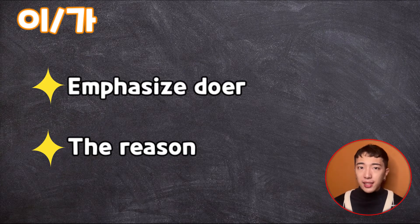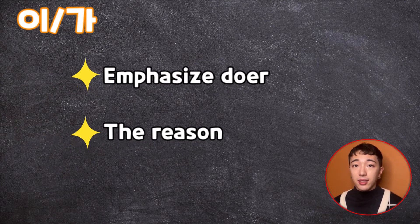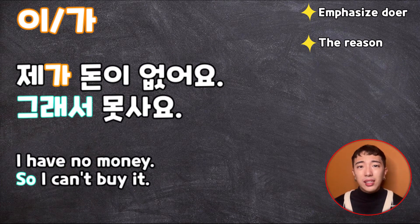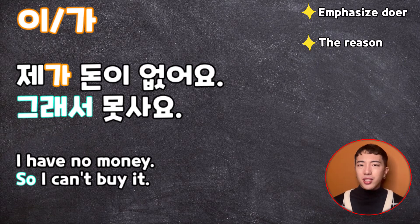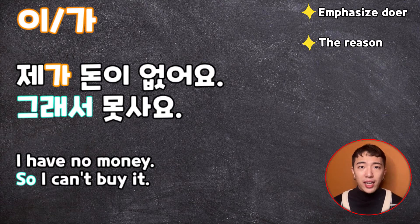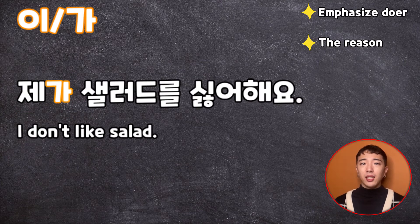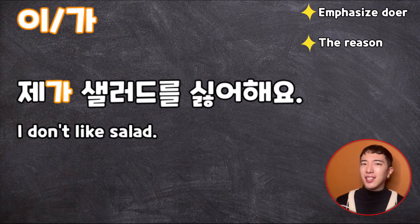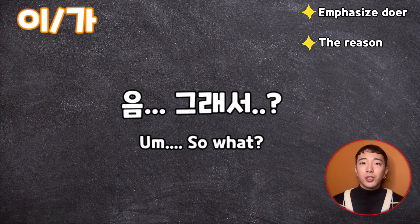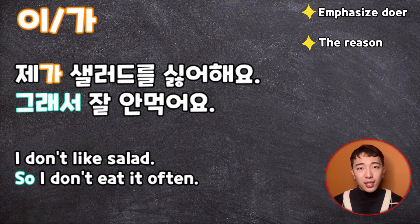The first sentence is the reason for the second sentence. 제가 돈이 없어요. 그래서 못 사요 — I have no money, so I can't buy it. It's okay to say 저는 돈이 없어요, 그래서 못 사요. But by using 가 instead of 는, you can emphasize the subject and explain why I can't buy it. Do you remember 제가 샐러드를 싫어해요? If you use 제가, people will wait for the next sentence — like, 제가 샐러드를 싫어해요. 그래서 잘 안 먹어요. I don't like salad, so I don't eat it often.